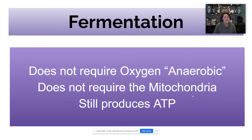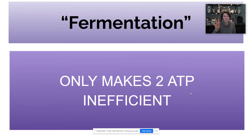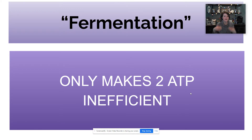So what is fermentation? It's an anaerobic process that doesn't require oxygen and doesn't require the mitochondria, but still produces ATP for the cell. It only makes two ATP per glucose molecule, so it's very inefficient — typically we'd like to see 36 to 38 when we go into the mitochondria. But if that's all you're going to get, we'll take it.